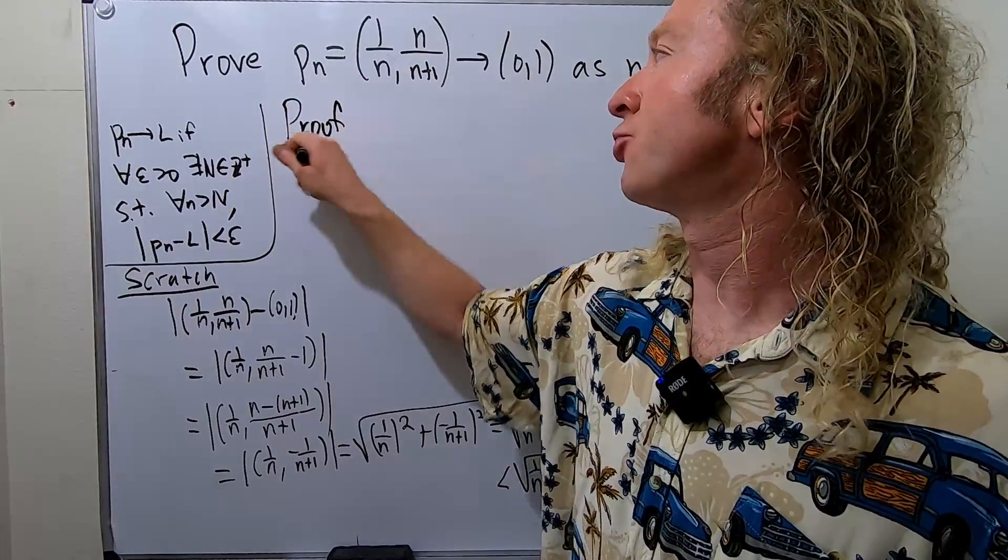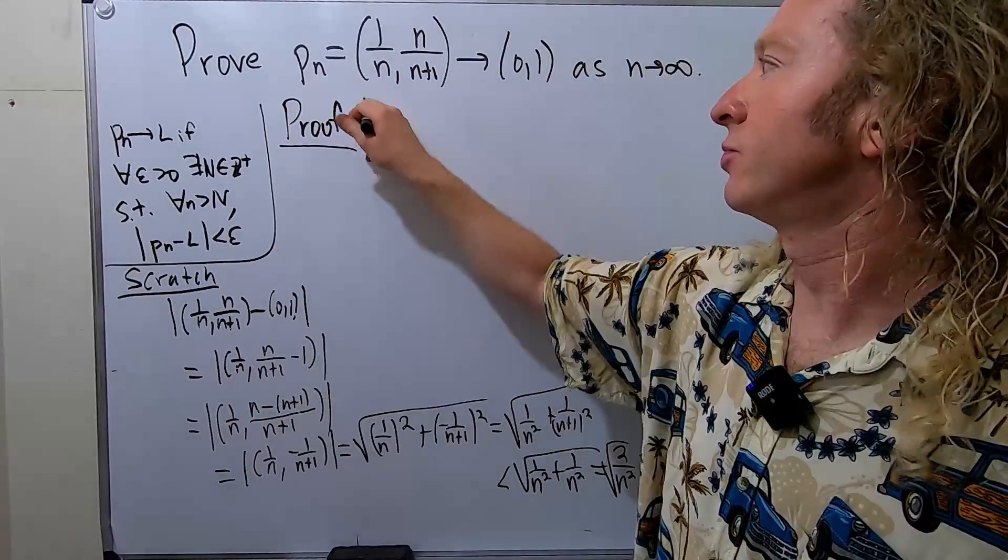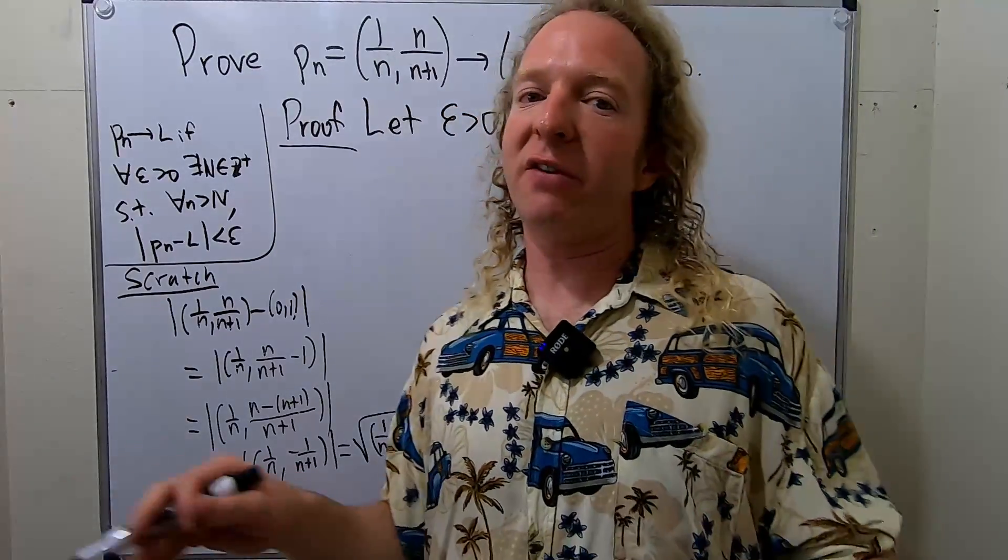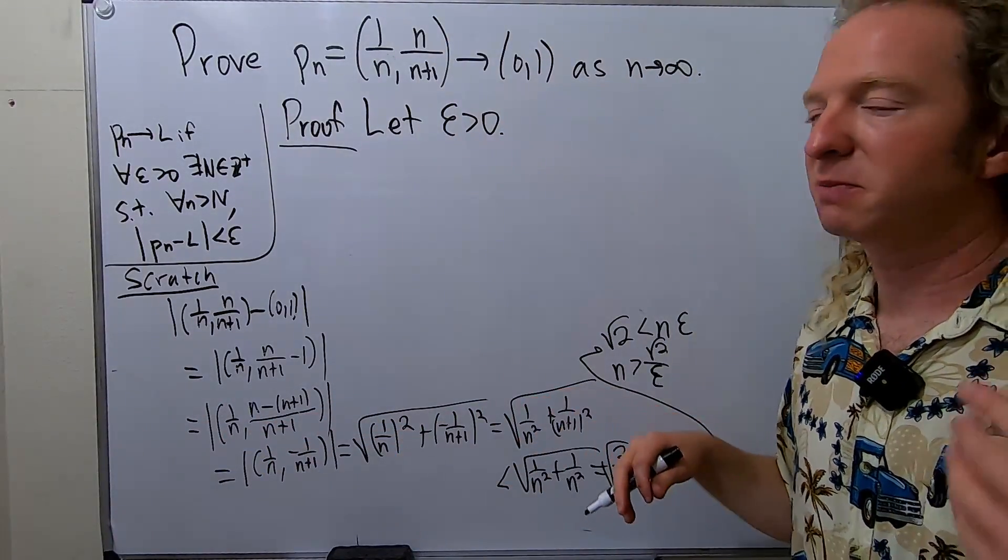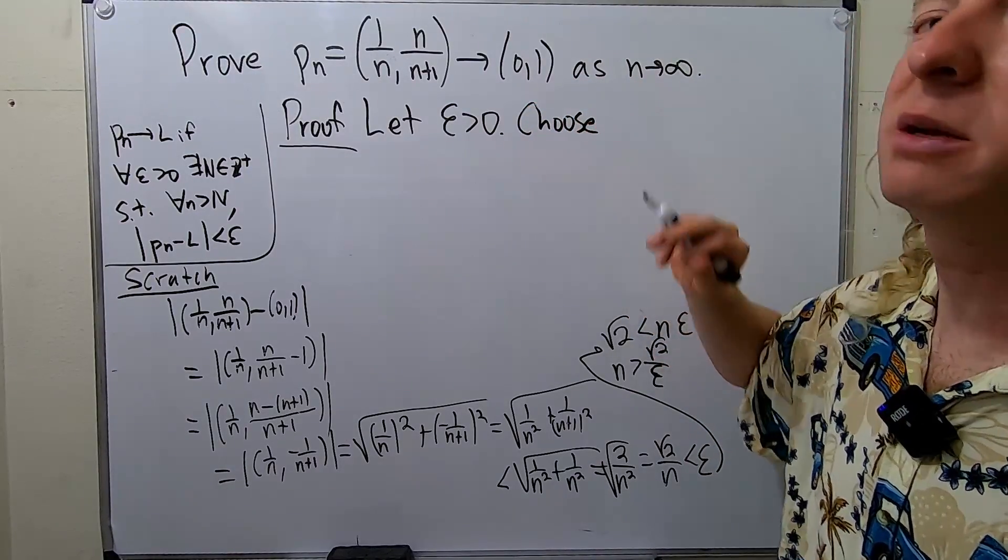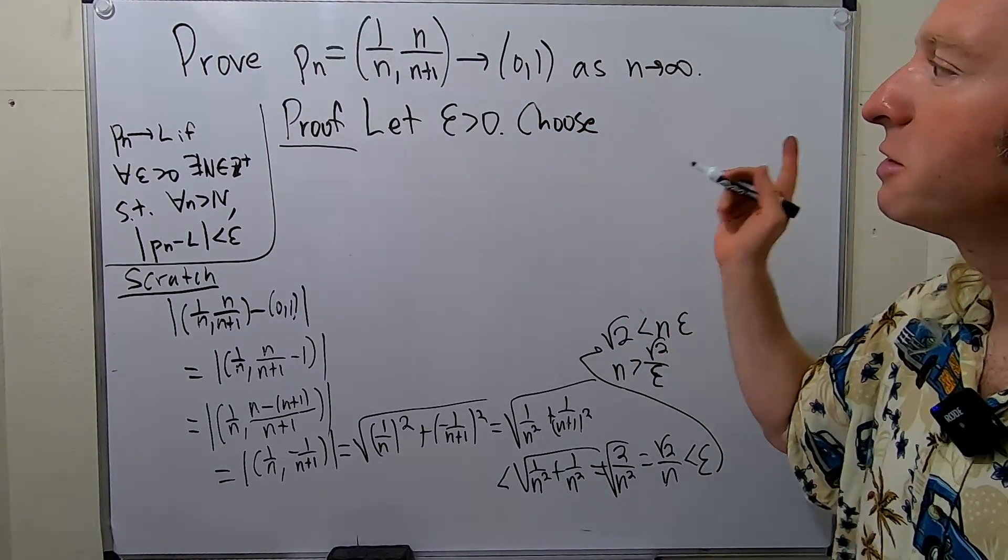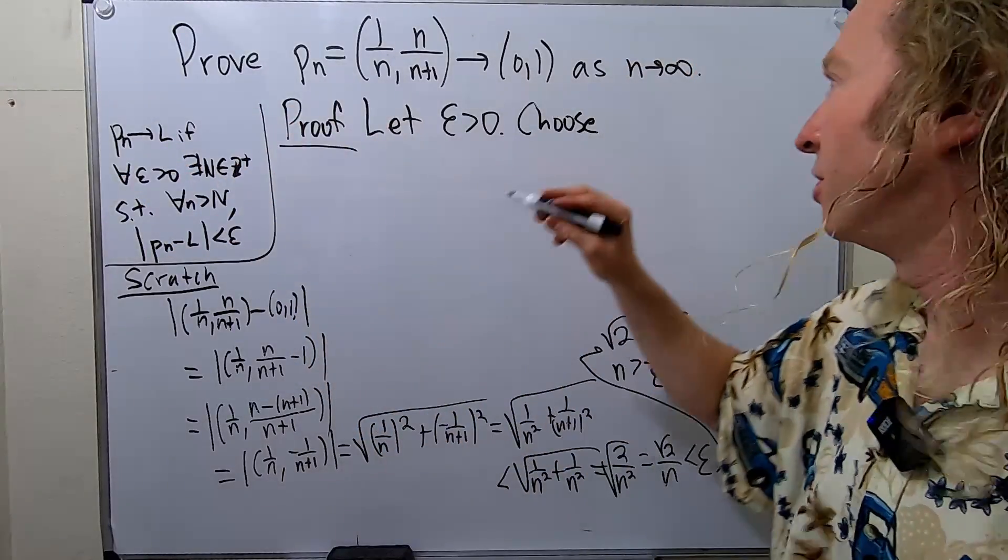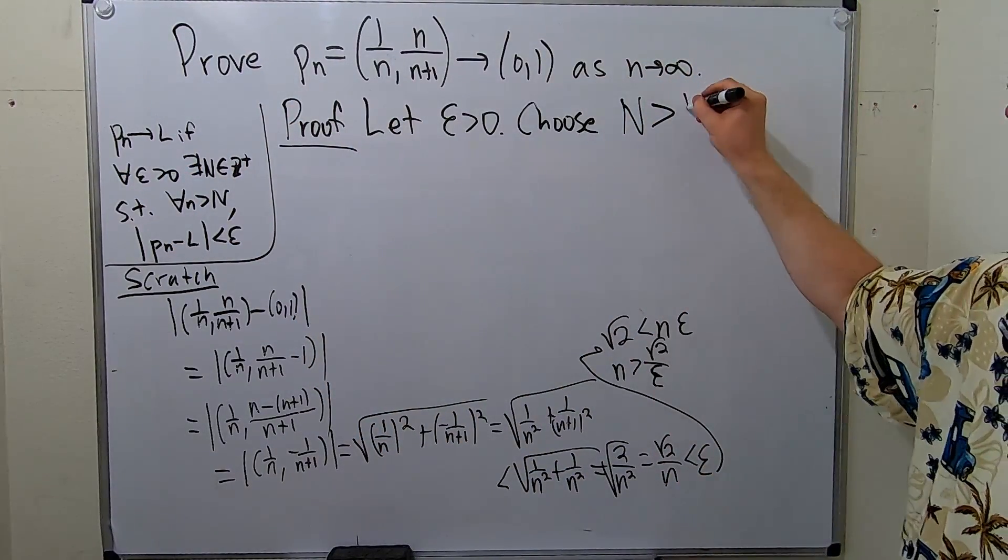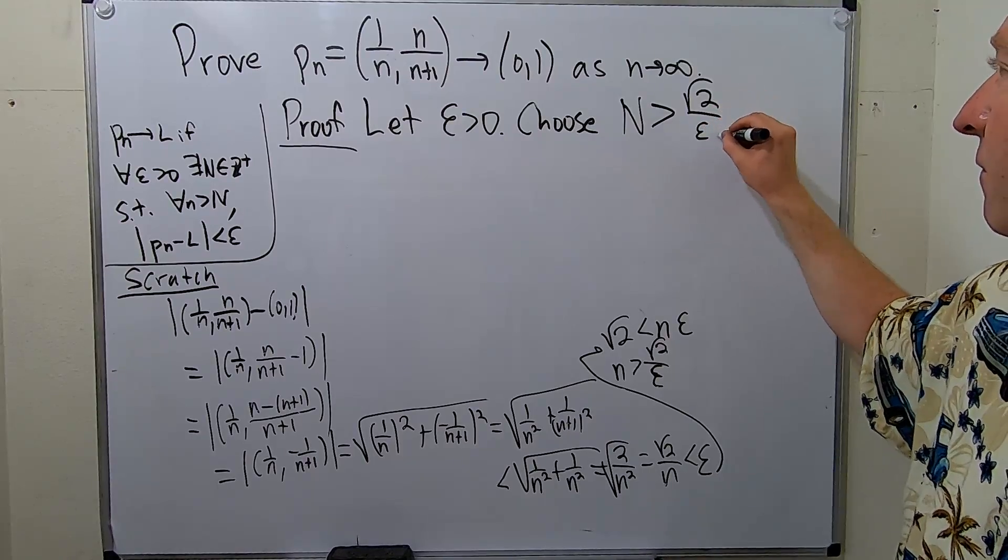So to do the proof we'll start by letting epsilon be greater than 0. And given any real number we can choose a number that's bigger, a natural number that's bigger. So choose. This is called the Archimedean Principle. So given any number you can always find a natural number that is larger. So choose an N that is bigger than square root of 2 over epsilon.